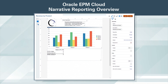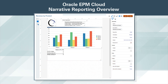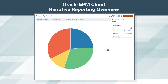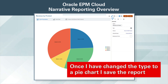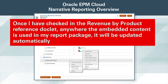The revenue by product report currently has a bar chart and a data grid. The data is sourced from our Oracle EPM Cloud financial close and consolidation business process. Since I don't need to change the data grid, I can just update the graph. I click to edit the chart object and change the type to a pie. Once I have changed the type to a pie chart, I save the report. Once I have checked in the revenue by product reference doclet, anywhere the embedded content is used in my report package, it will be updated automatically.